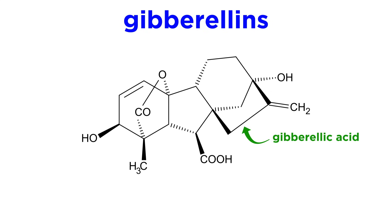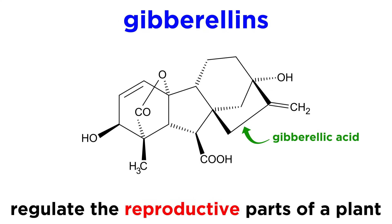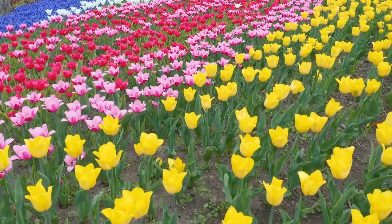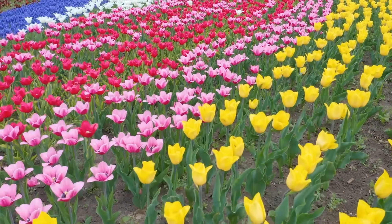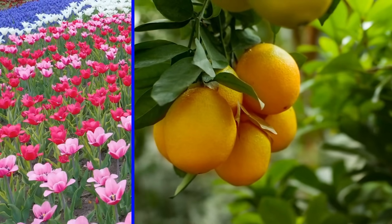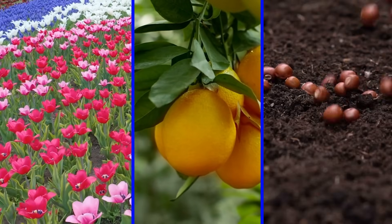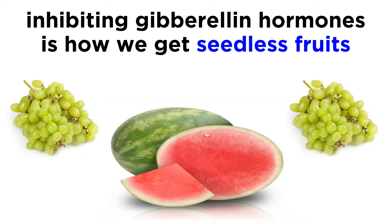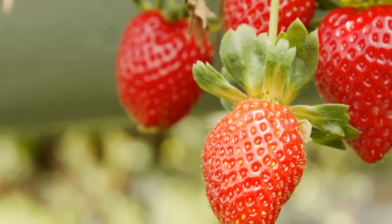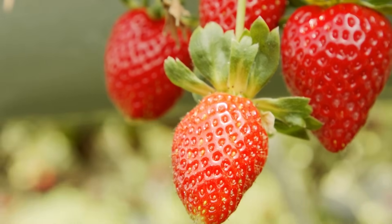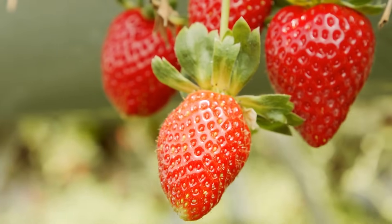Another group of plant hormones, the gibberellins, is primarily responsible for the reproductive parts of a plant. Production and distribution of gibberellins is what causes flowers to mature, stimulates pollinated flowers to turn into fruits, and causes seeds to mature and be ready for planting. Scientists have discovered that preventing the normal activities of gibberellin hormones can cause fruits to be seedless — that's how we get things like seedless grapes. We can also use a spray of gibberellin hormones on crops to cause their fruits to grow bigger than they would in the wild.